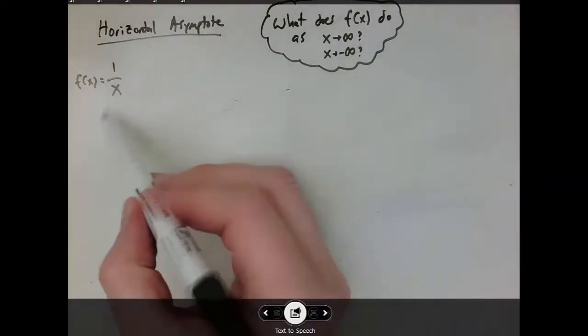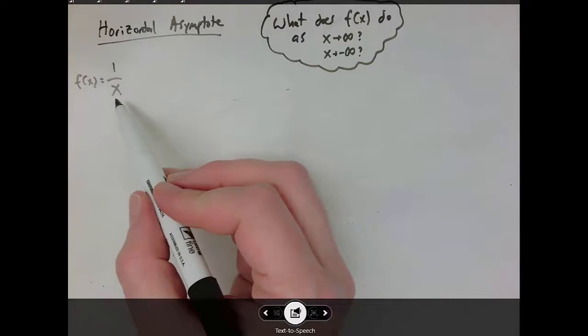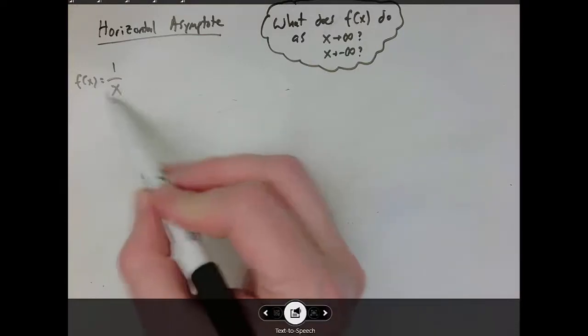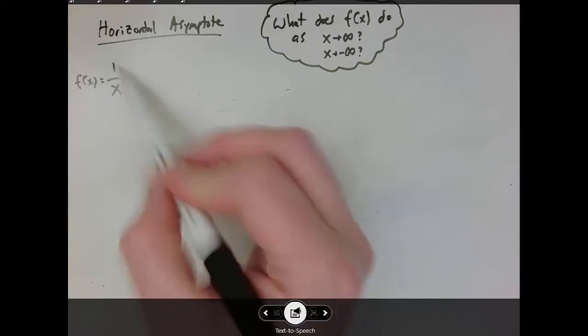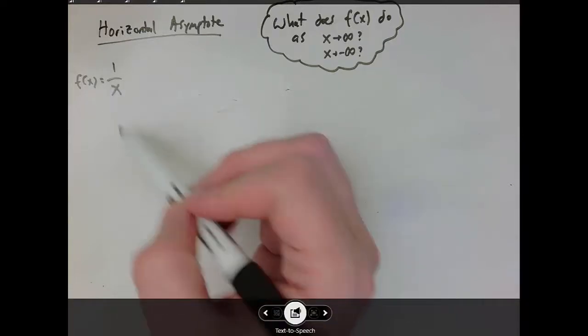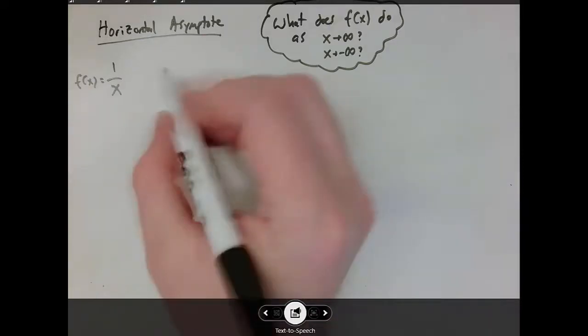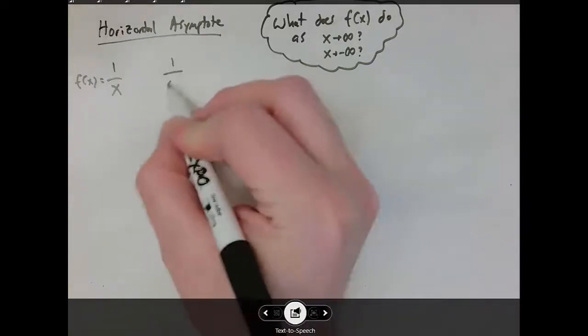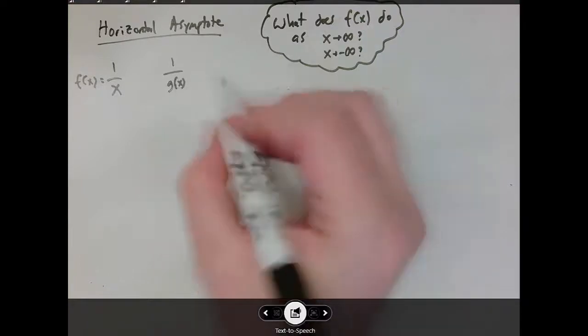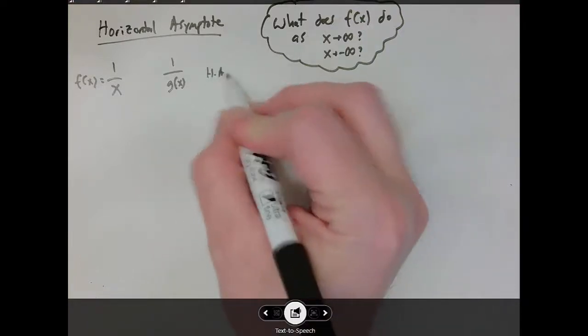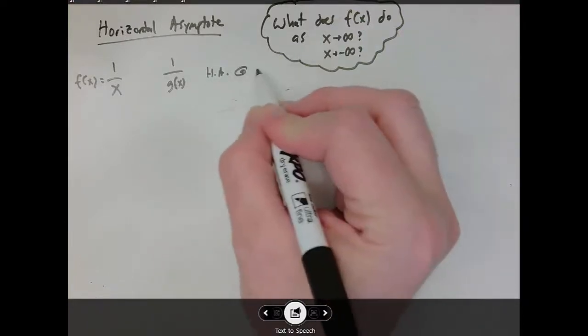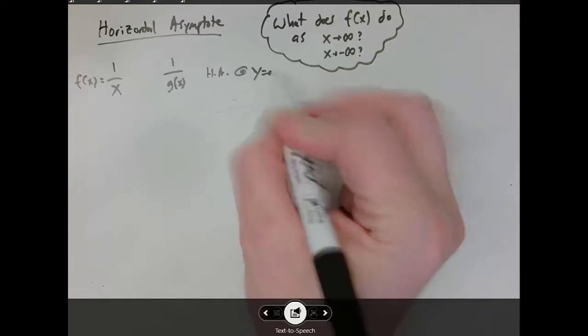So one way of explaining why you get a horizontal asymptote at zero is when x gets larger and larger, because it's in the denominator, this overall fraction gets smaller and smaller approaching zero. So if we were going to generalize that idea, we could say that one over g of x has a horizontal asymptote at zero, at y equals zero.